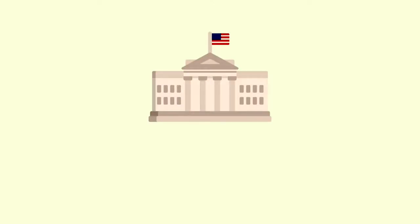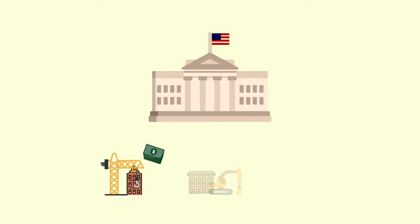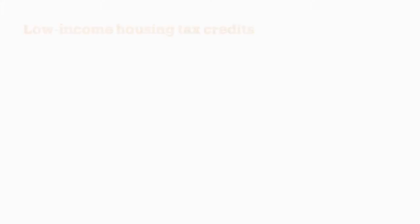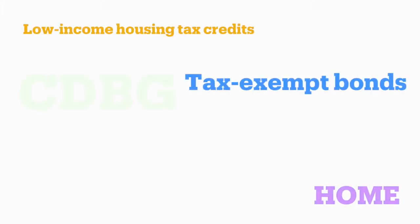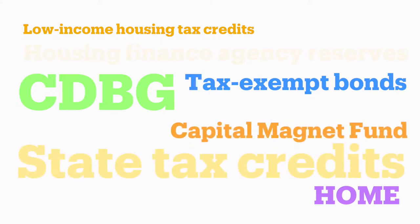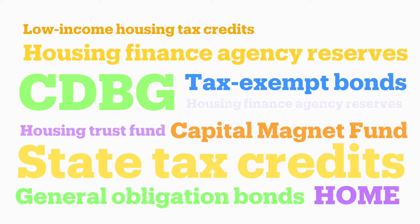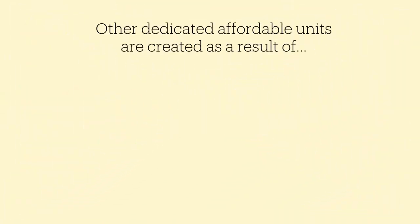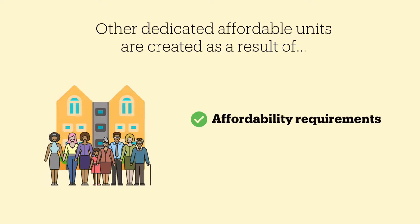In the past, the federal government was the sole funder of the construction of many affordable housing developments. Today, dedicated affordable housing is usually created using subsidies from multiple sources, including federal, state, and local governments, financial institutions, and charitable foundations. Other dedicated affordable units are created as a result of affordability requirements or incentives established by local or state government.